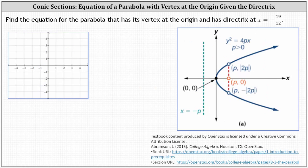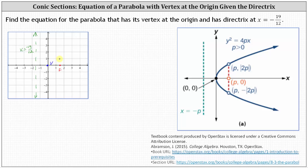Moving to our next example. Once again, the vertex is at the origin, but now the directrix is the vertical line x equals negative 19 twelfths. Negative 19 twelfths is approximately negative 1.58, and therefore the directrix would be approximately here. Notice the directrix is 19 twelfths units to the left of the vertex, which indicates the focus must be 19 twelfths units to the right of the vertex, approximately here, where the ordered pair would be 19 twelfths comma 0. From here, we know the parabola must open to the right and would look something like this.